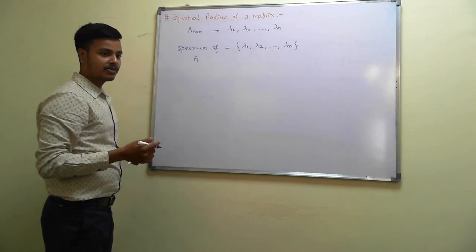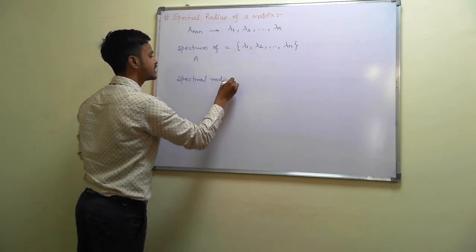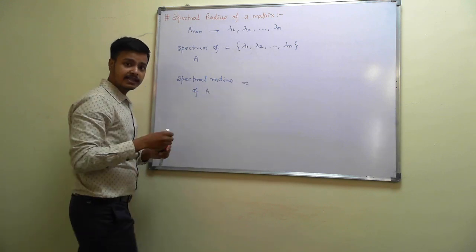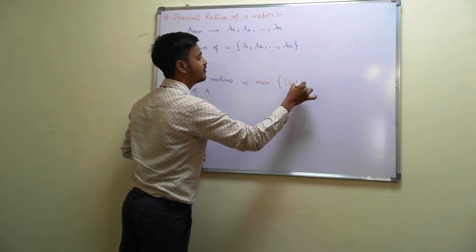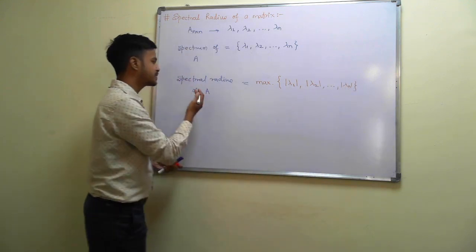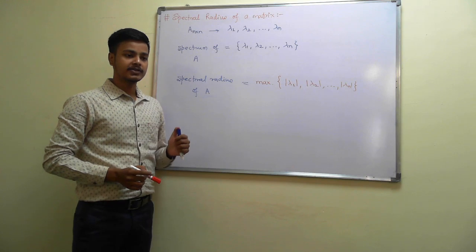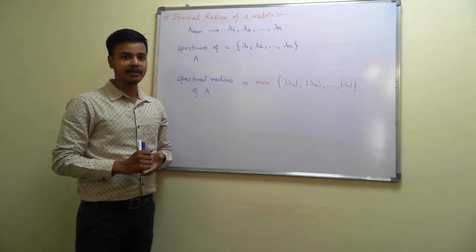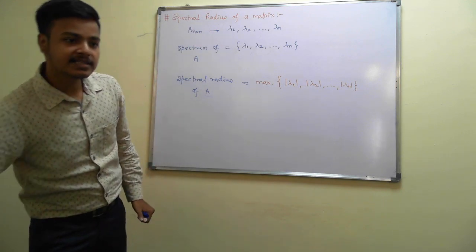Now let me tell you what is spectral radius. The spectral radius of A is nothing but the maximum of the modulus of the eigenvalues of A. So if you have n eigenvalues, take their absolute values and whichever is the maximum, that becomes the spectral radius for the given matrix A. To make the idea more clear, let me take an example on the same topic.